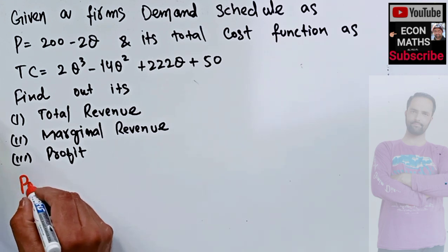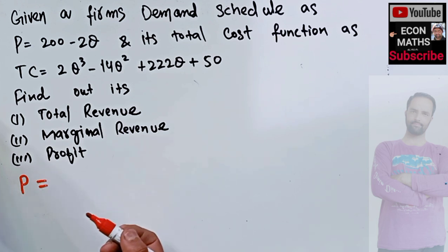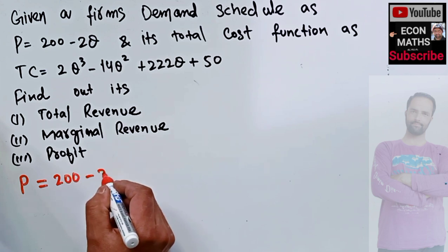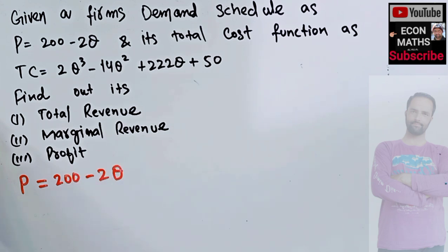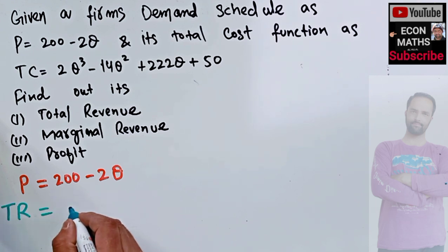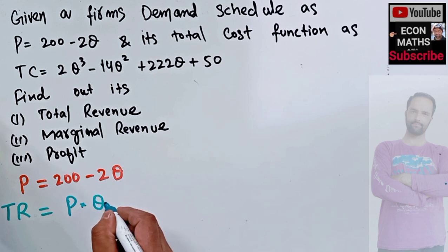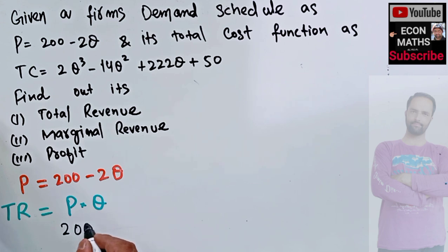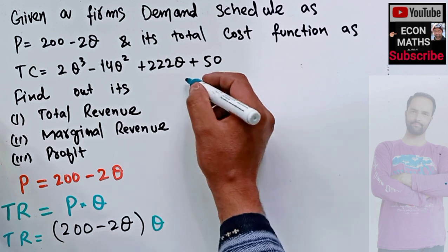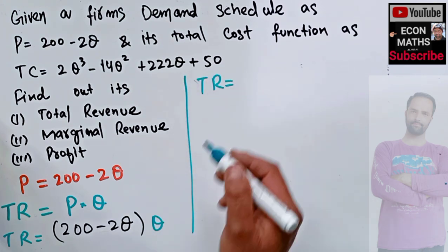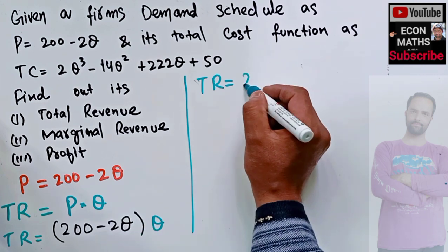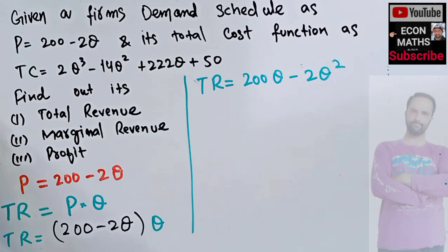We are given the inverse demand function where price is expressed in terms of output: p equals 200 minus 2q. To find total revenue, we know total revenue is simply price multiplied by quantity. So in place of p we substitute 200 minus 2q and multiply by q. Simplifying, our total revenue equals 200q minus 2q squared.